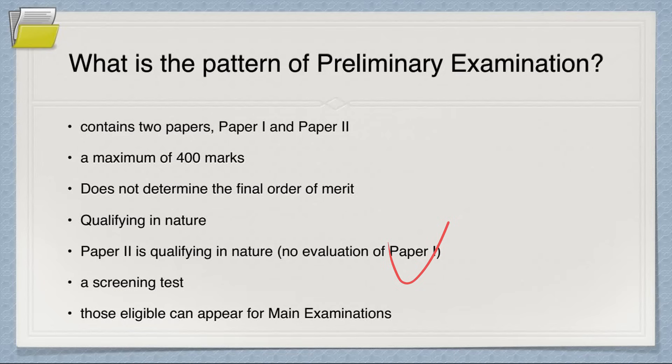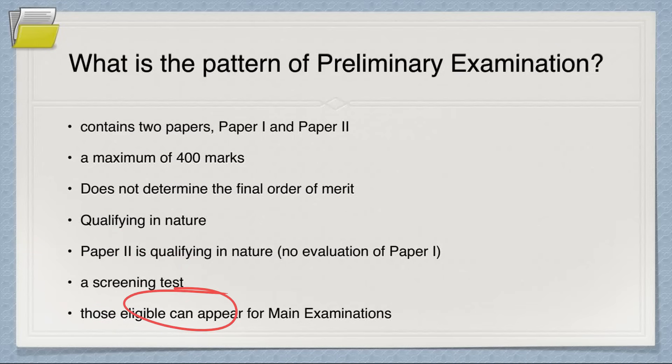Make sure you give Paper 2 equal importance — if you are weak in it, give at least one week to it. Prelims is just a screening test to filter non-serious candidates from serious ones. About 98 percent of candidates are filtered out at this stage, so make sure you are in the top two to three percent. Those who are declared eligible by the Union Public Service Commission after one or two months can appear for mains.